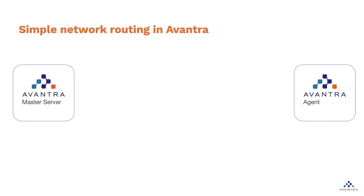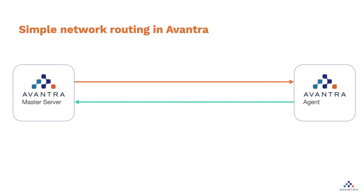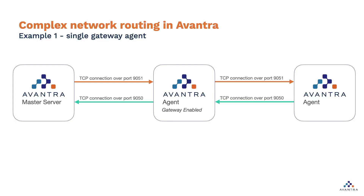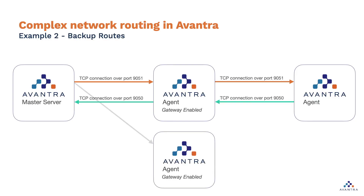Your network setup within your Avantra landscape can be as simple as a direct two-way connection between your master and your agent. You also have the option of much more complex setups, including using an agent as a gateway or as a proxy for agent communication back to the master server. You also have complex options such as fallback routes should your primary communication route become unavailable.